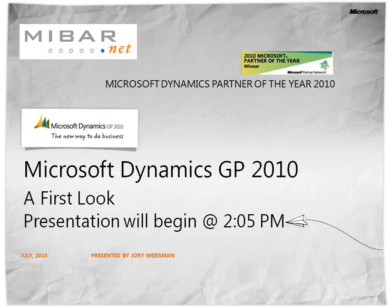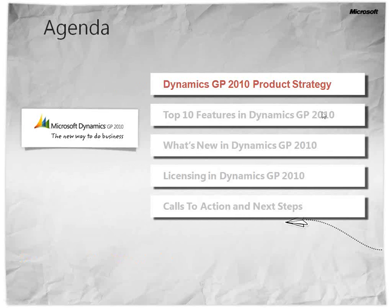It's just after 2:05, so we'll get into the heart of this thing. One of the first things we want to look at is the agenda for today's meeting. The first item is what is the Dynamics GP 2010 product strategy — we'll get a sense of where they're headed as an organization and what their vision is for the future.